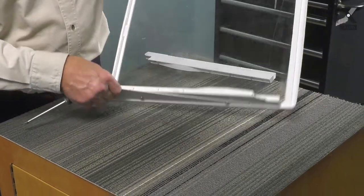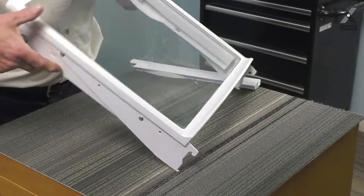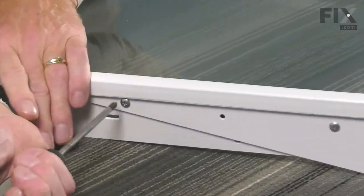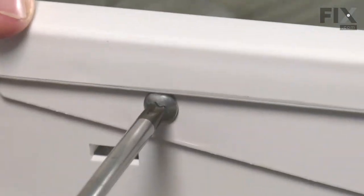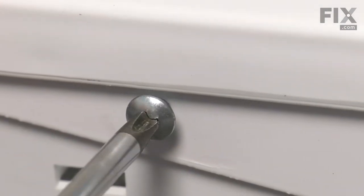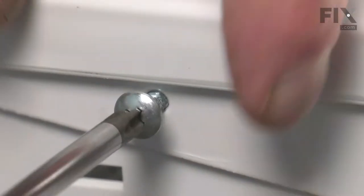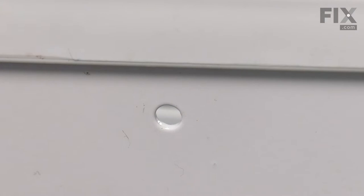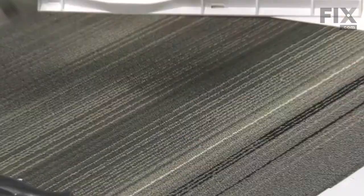Now, to change out that glide, we simply need to remove the two mounting screws located on the outside edge. These are a number two Phillips head screw. You can remove and discard the old glide.